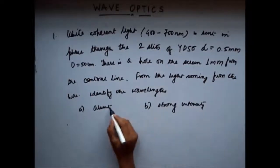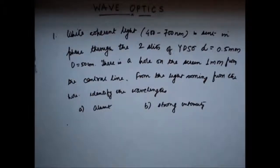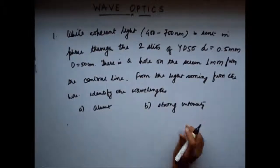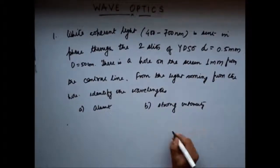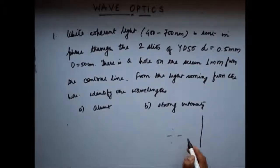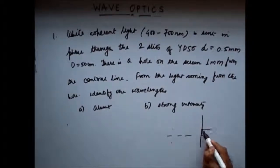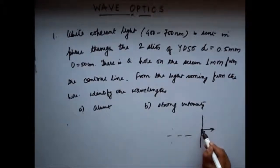Absent means that for those wavelengths, there is destructive interference occurring. Strong intensity means that for those wavelengths, there is constructive interference. So we have a setup like this — there is a screen, this is the center line, one millimeter from the center line there is a hole on the screen, and there is light coming out from the screen. Because of interference occurring, different wavelengths will have different interference patterns at this point. Some will have constructive interference, some will have destructive interference.